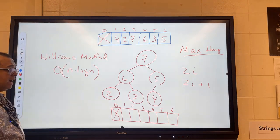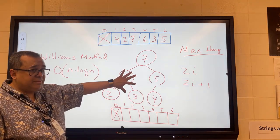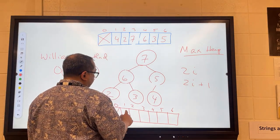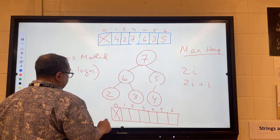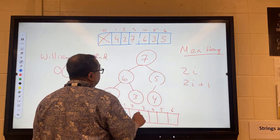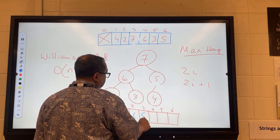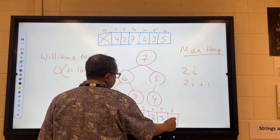So how are we going to fill this array to represent this heap here? Okay, level order traversal. So what do I put in here? 7, 6, 5, 2, 3, 4. Okay, like that.